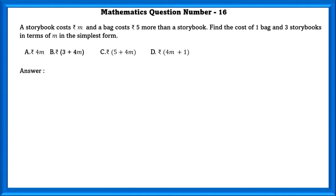Classics IMO Level 2, Mathematics question number 16. A storybook costs M rupees and a bag costs 5 rupees more than a storybook. Find the cost of 1 bag and 3 storybooks in terms of M in the simplest form.